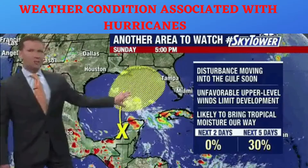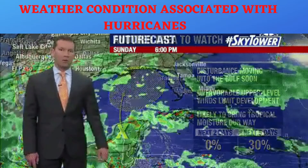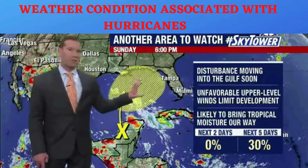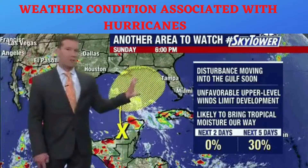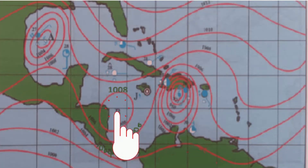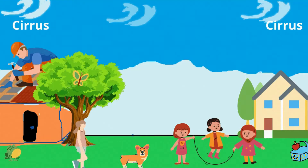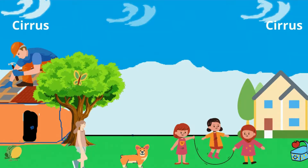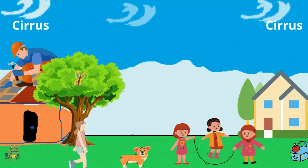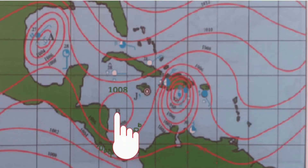Let's now examine how weather conditions will change as a hurricane passes over an area. Ahead of a hurricane, there is generally stable weather conditions. On a weather map, the isobars are generally widely spaced with higher values.